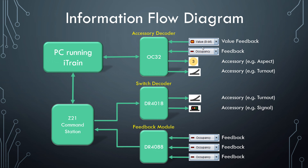As a reminder, with the value 8-bit feedback sensor, if you have the actual physical device it can currently only be used with the OC32 accessory decoder. With the aspect, we have a similar limitation in that the OC32 is currently the only hardware that fully supports 8-bit data flow and which is supported within iTrain. So if you want to use a real physical aspect device that requires 8-bit data, you would need the OC32 accessory decoder.